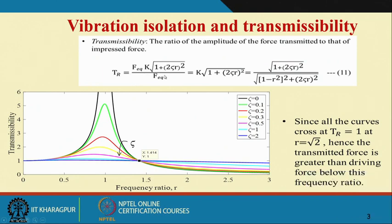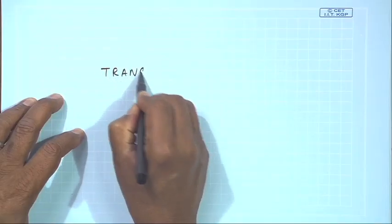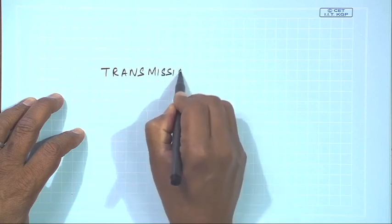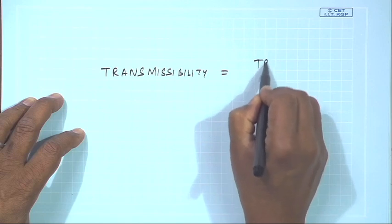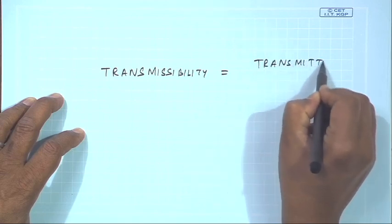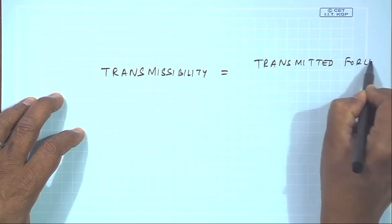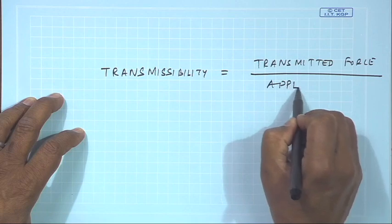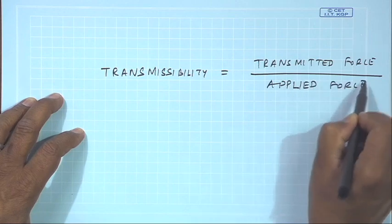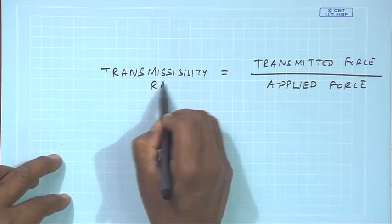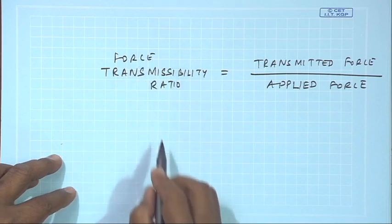The force transmissibility will be given by this expression. The ratio of the force transmitted to that of the impressed force is shown by this curve. The transmissibility ratio is nothing but the transmitted force divided by the applied force, and this force transmissibility ratio is given by this expression.